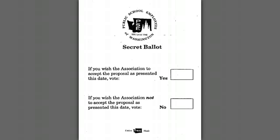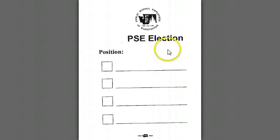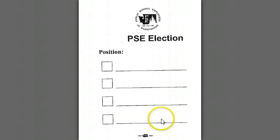The second document is going to be the PSC election document. This document is used to elect positions within the local, and basically what you would do is write in the name of the position and the individual's name here.